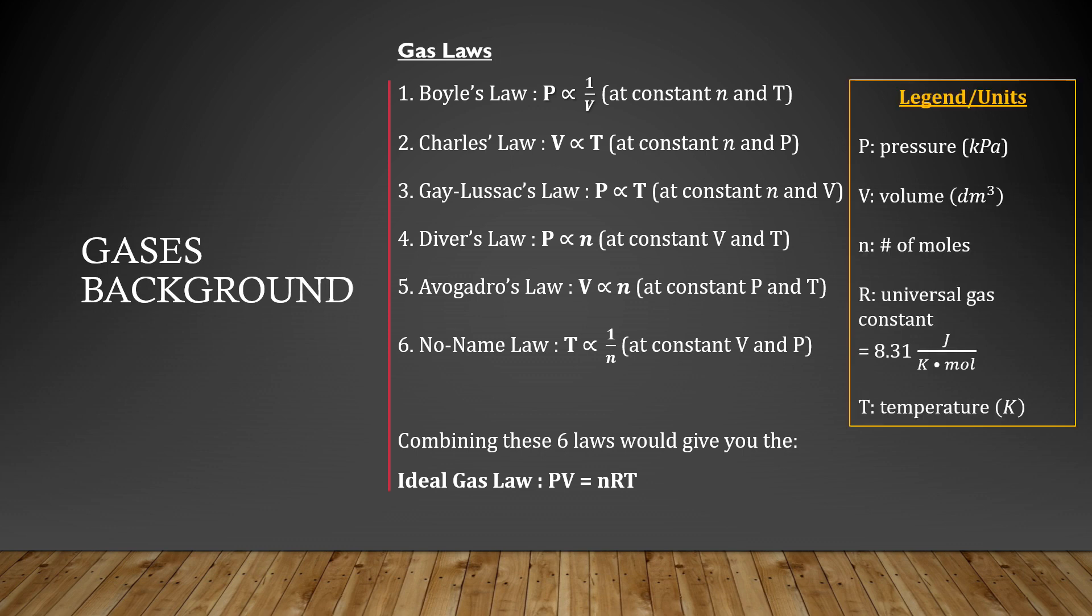P represents pressure in kilopascals. V is the volume in decimeter cubed. N is the number of moles. R is the universal gas constant as shown as 8.31 joules per kelvin moles. And T is temperature in kelvin.